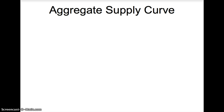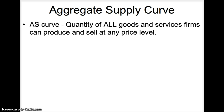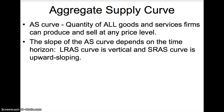The aggregate supply curve shows the quantity of all goods and services firms can produce and sell at any price level. The slope of the aggregate supply curve depends on the time horizon. The long-run aggregate supply curve LRAS is vertical, and the short-run aggregate supply curve SRAS is upward sloping.